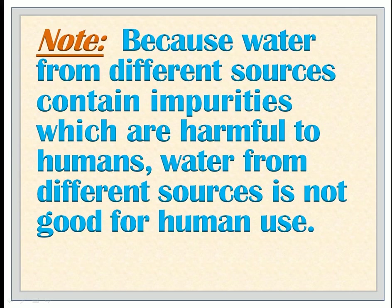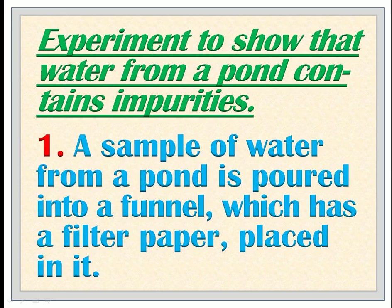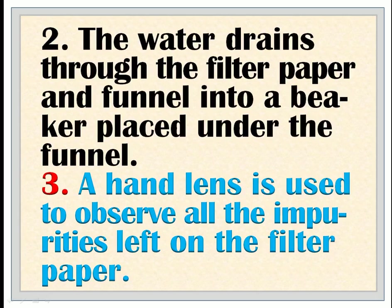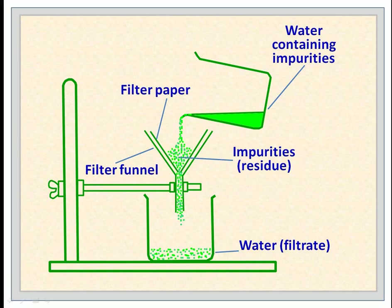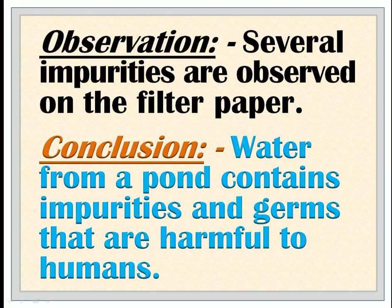Water from different sources contains impurities which are harmful to humans, therefore water from different sources is not good for human use without treatment. Experiment to show that water from a pond contains impurities: 1. A sample of water from a pond is poured into a funnel which has a filter paper placed in it. 2. The water drains through the filter paper and funnel into a beaker placed under the funnel. 3. A hand lens is used to observe all the impurities left on the filter paper. Observation: Several impurities are observed on the filter paper. Conclusion: Water from a pond contains impurities and germs that are harmful to humans.